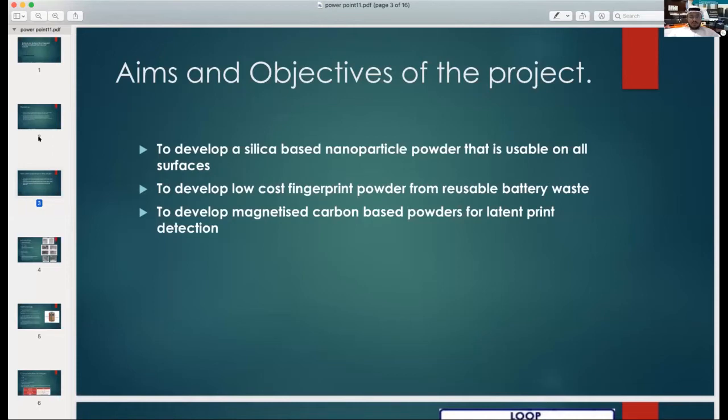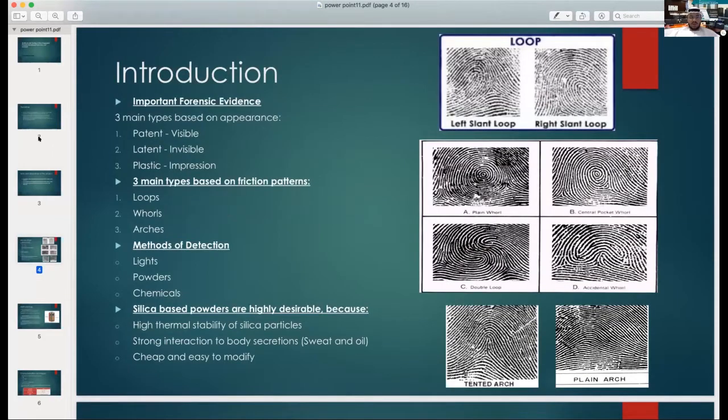Okay, so first of all I will start with the introduction. As I think everyone knows, three main types of fingerprints can be seen or not seen. So we have the patent, which is a visible fingerprint, a latent fingerprint, which is invisible, and you have plastic, which is an impression, I would say more like a 3D impression.